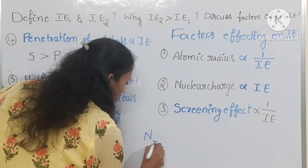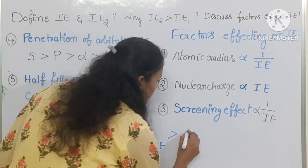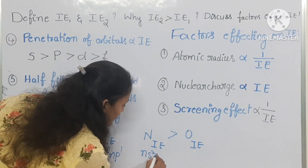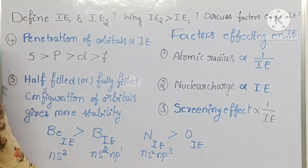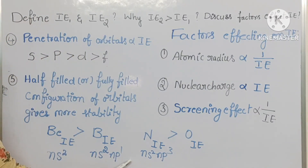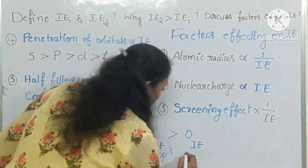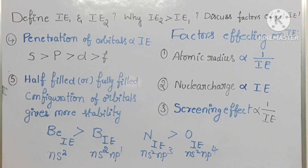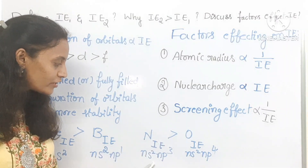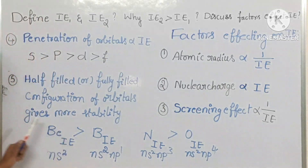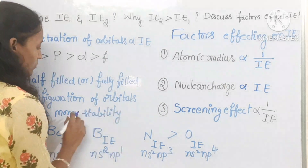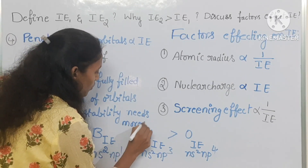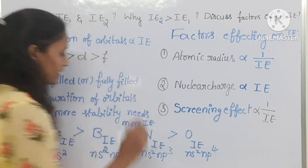Another example: the ionization enthalpy of nitrogen is greater than that of oxygen. Nitrogen has ns² np³ configuration (half-filled), while oxygen has ns² np⁴ configuration. Nitrogen's half-filled configuration gives more stability, so it needs more energy to remove an electron. More stability means more IE.